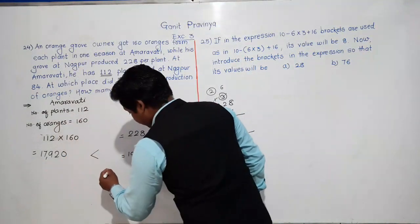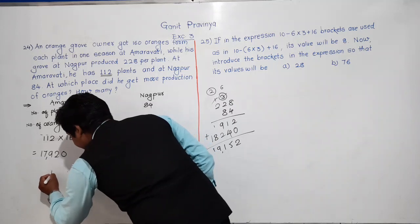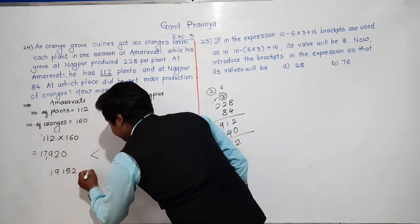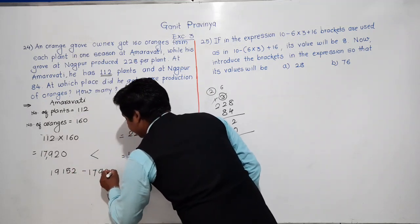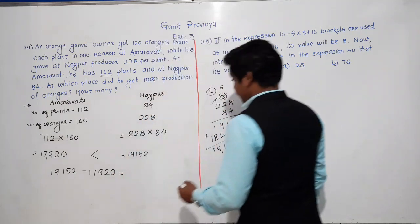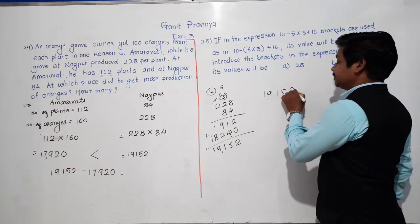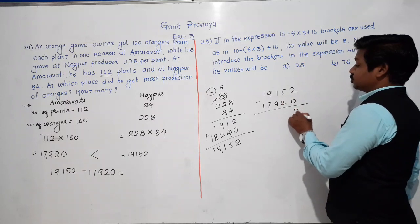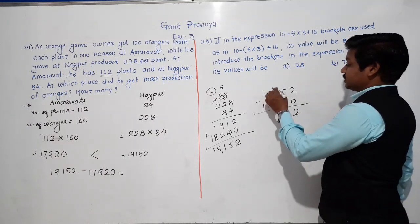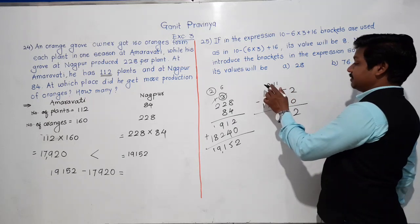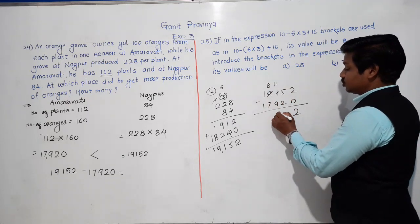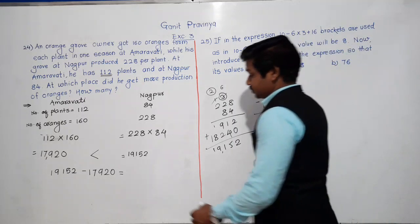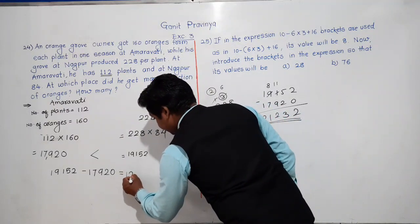19,152 minus 17,920: 2 minus 0 is 2; 5 minus 2 is 3; 1 minus 9 not possible, so borrow — 11 minus 9 is 2, 8 minus 7 is 1, and 0. The result is 1,232. So he got more production of oranges at Nagpur, more by 1,232 oranges.